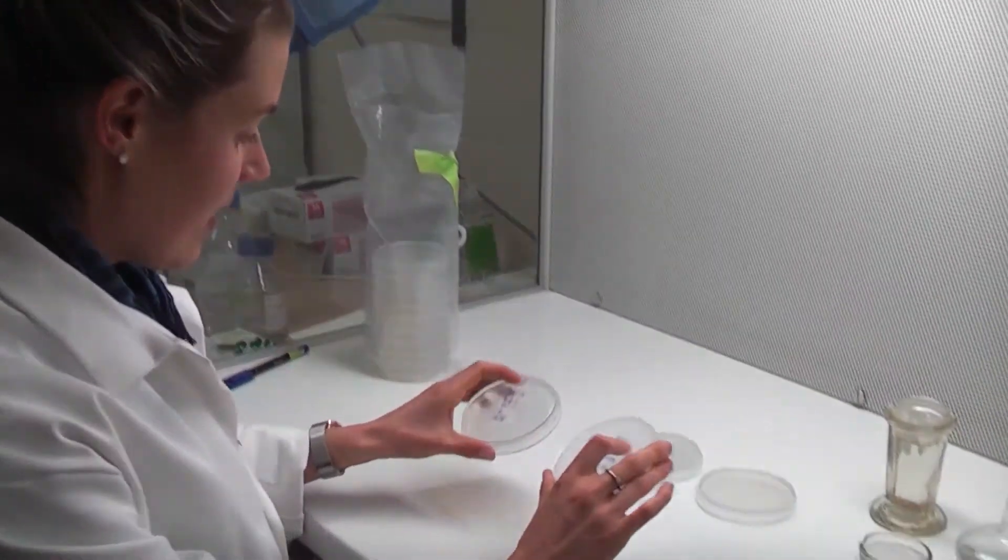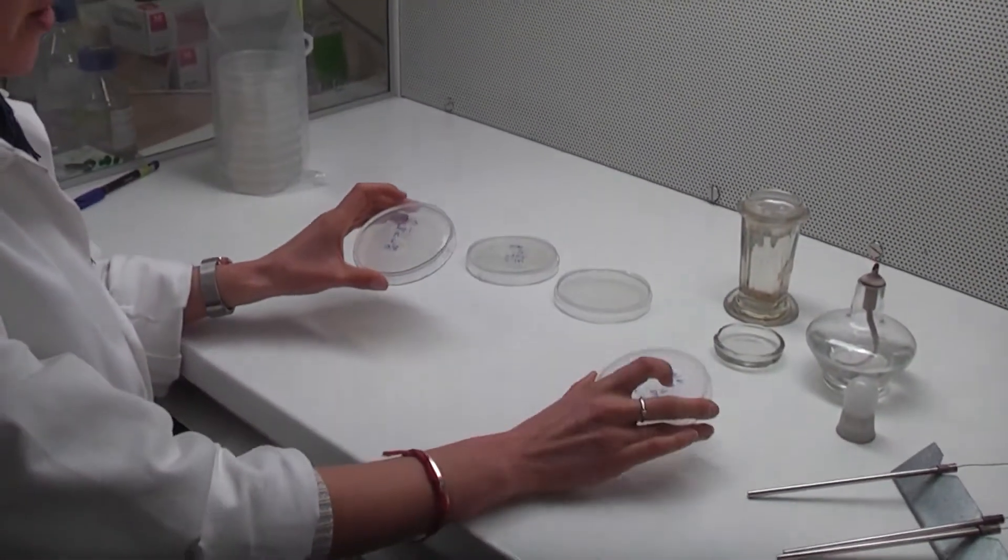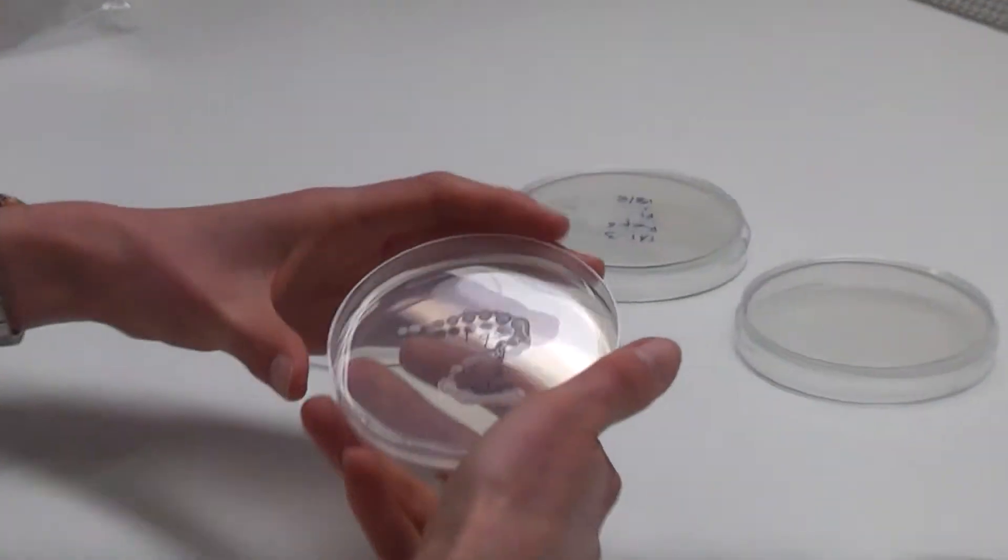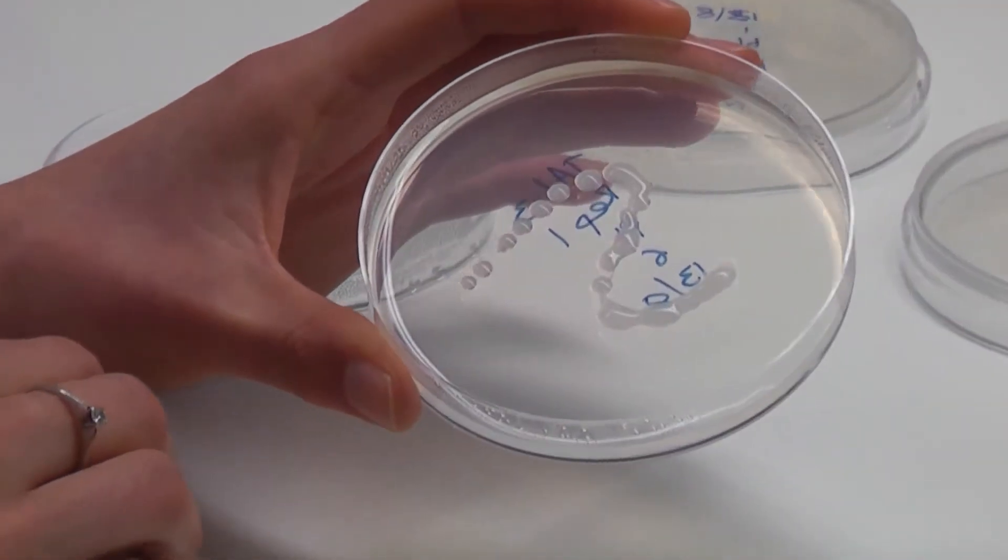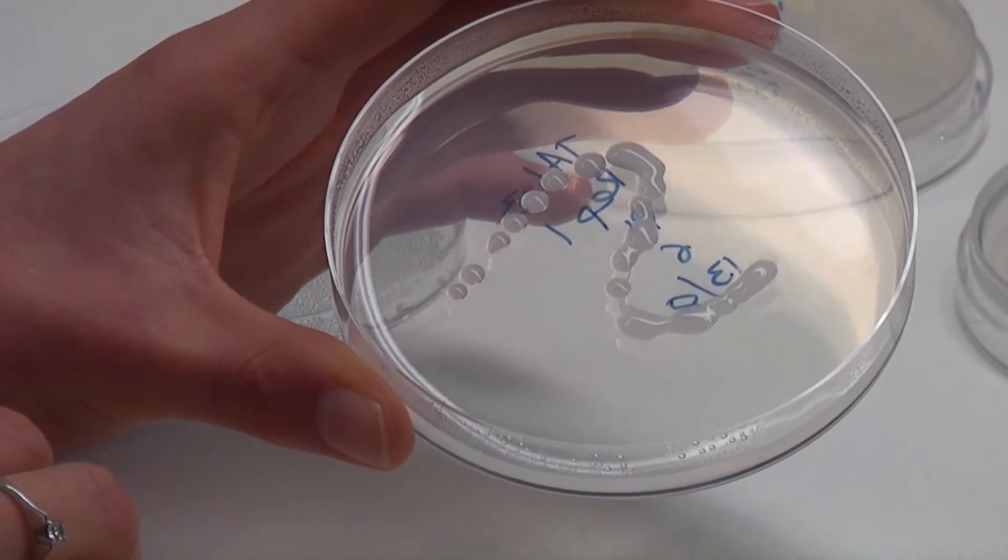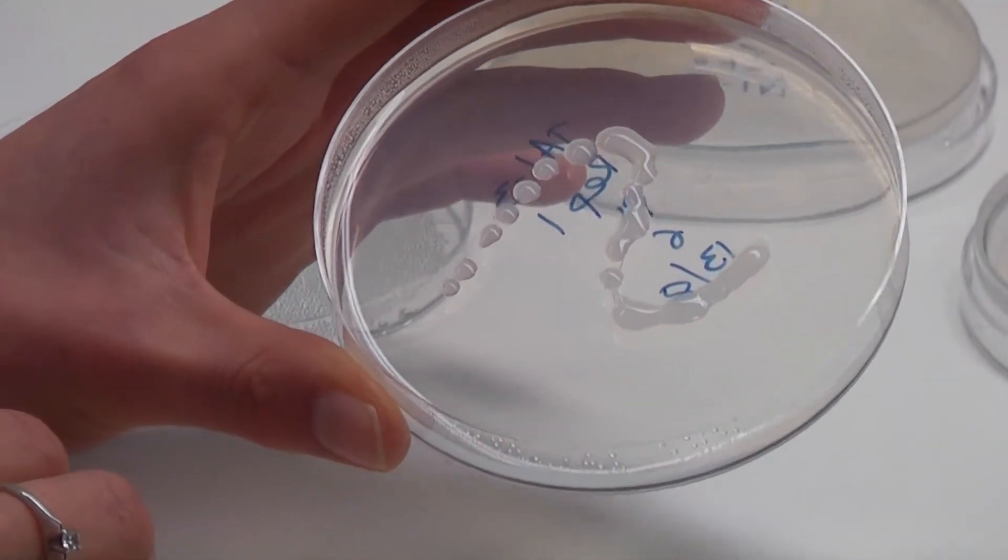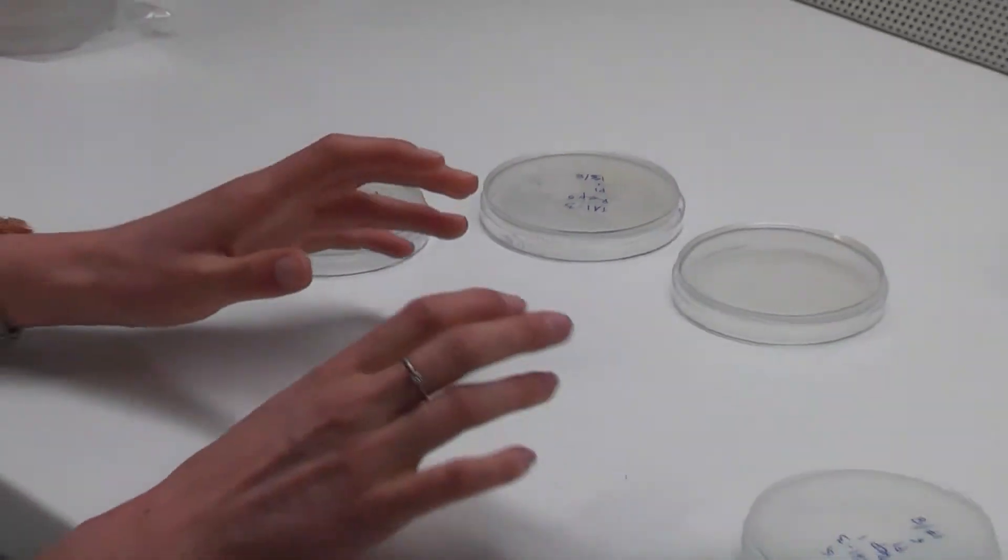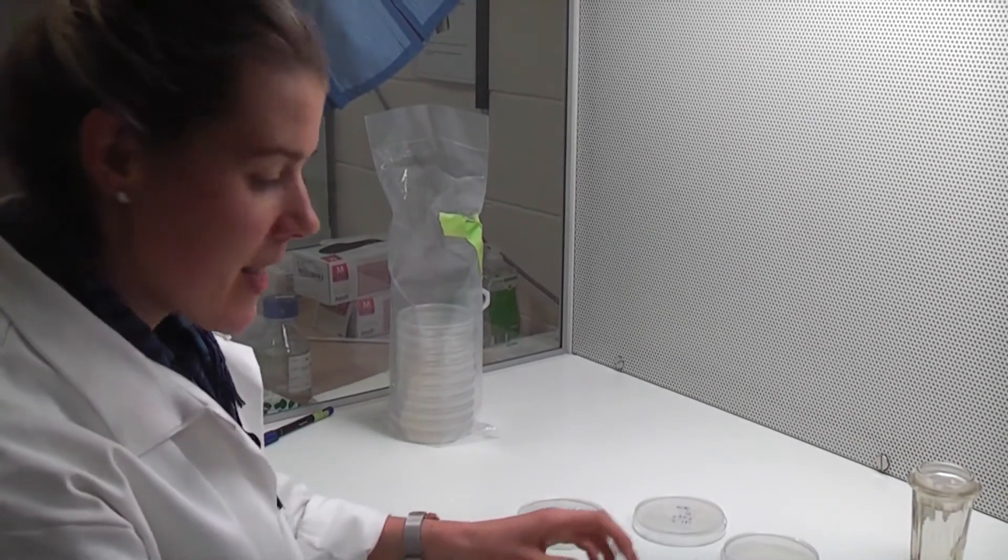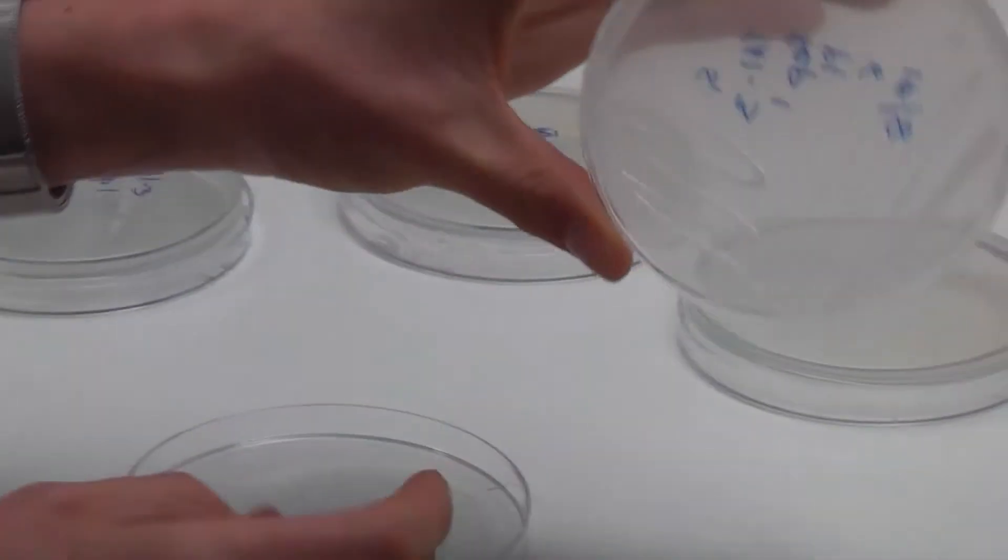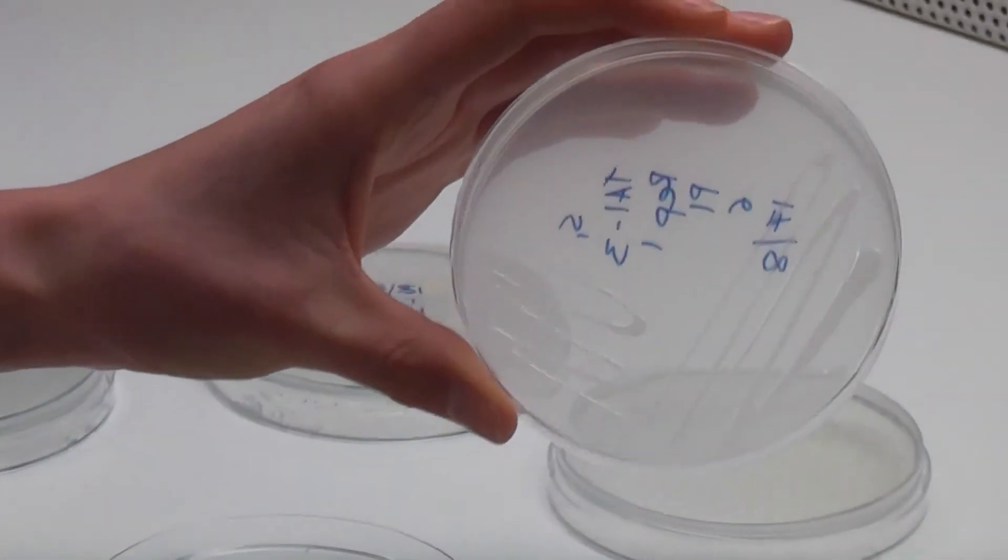So here we have a plate that I'd grown up earlier. This here is the original plate. It's pretty clean but it's just good practice to do at least one sub from all plates. And so you incubate that at 25 degrees in the dark for a couple of days and this is the resulting plate. So that's a pure culture there.